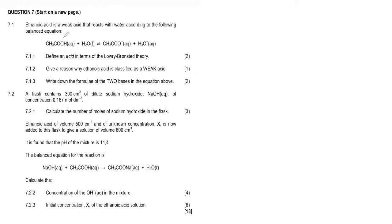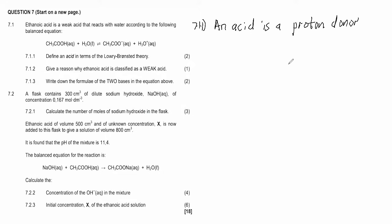Question 7, still on acids and bases. It says ethanoic acid is a weak acid that reacts with water according to the following balanced equation. Question 7.1.1 says define an acid in terms of the Lowry-Brønsted theory. An acid is a proton donor — that's how we define an acid according to the Lowry-Brønsted theory.